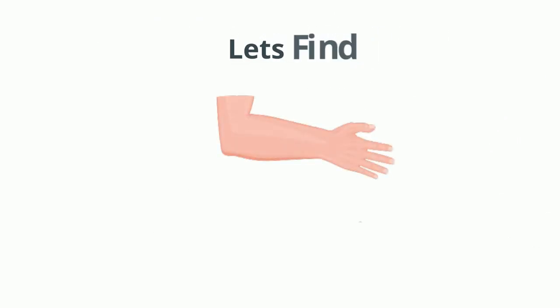Let's find out what cubit is. The length between your elbow to the tip of your fingers is known as a cubit.